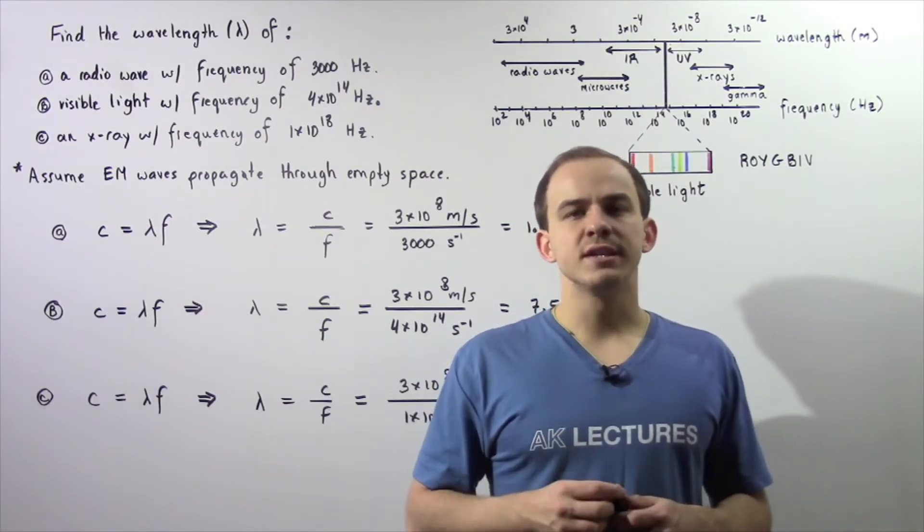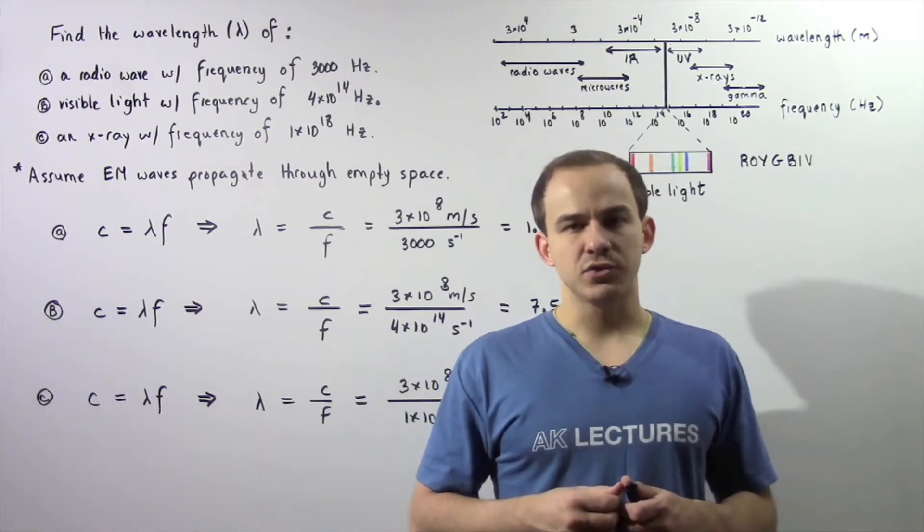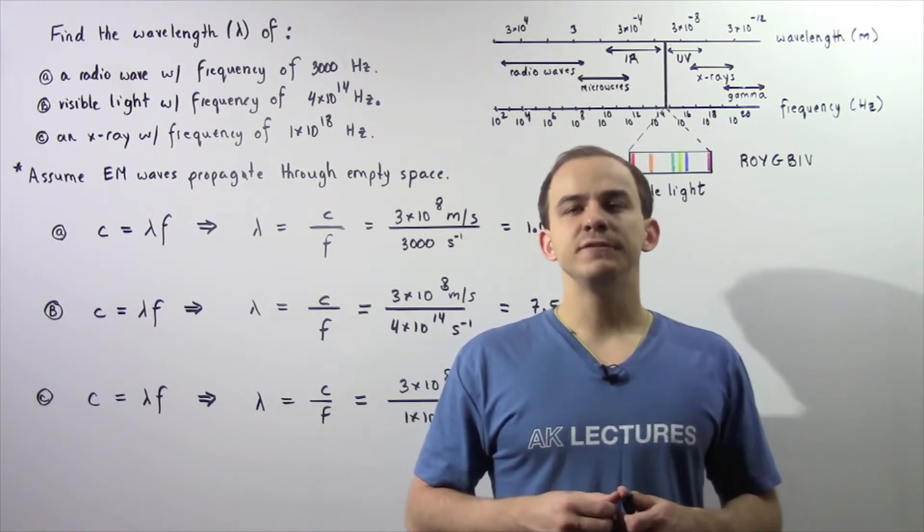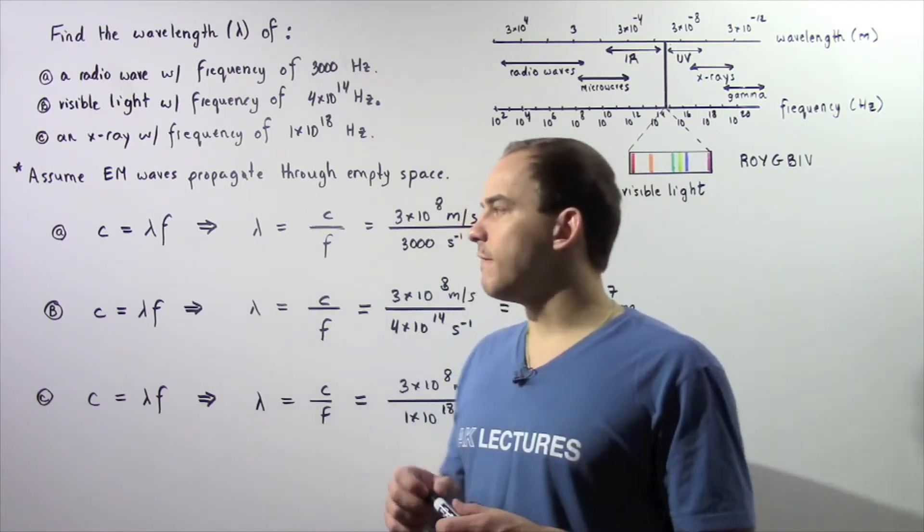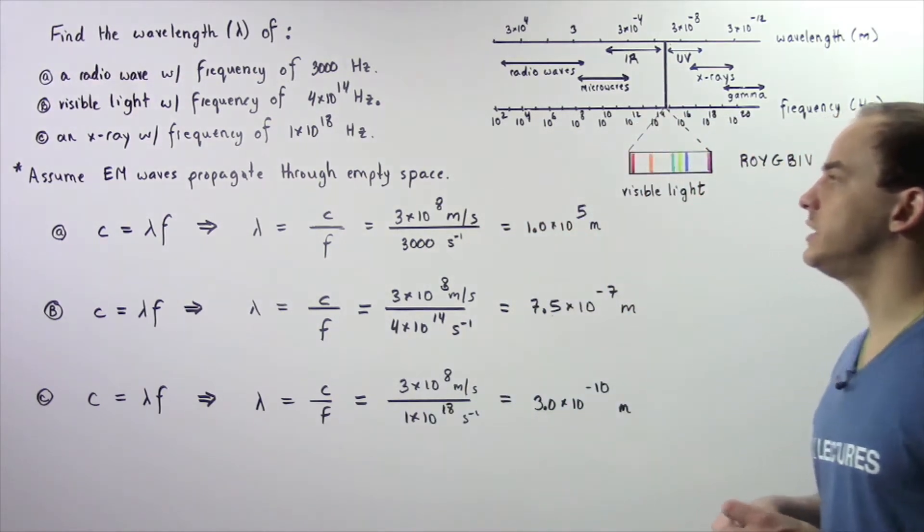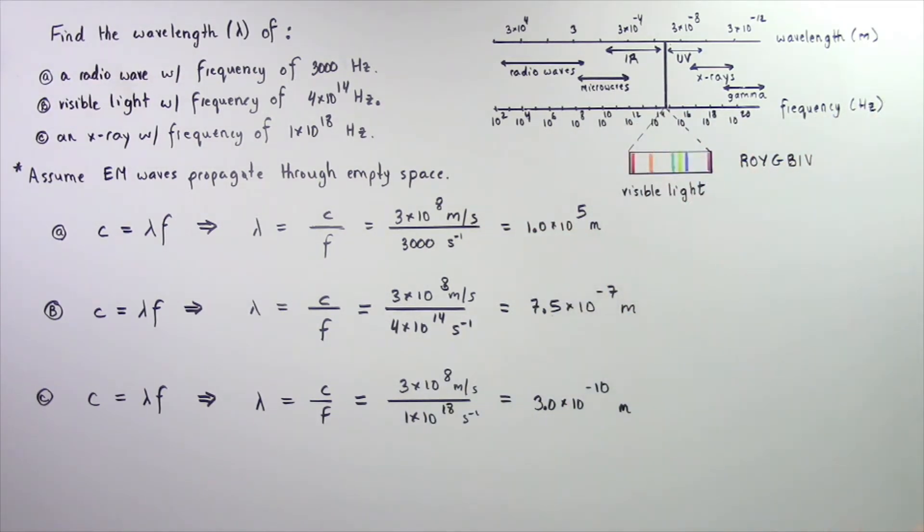In the previous lecture we discussed the electromagnetic spectrum and we looked at the different types of electromagnetic waves. Now let's look at the following example that will deal with the electromagnetic spectrum.